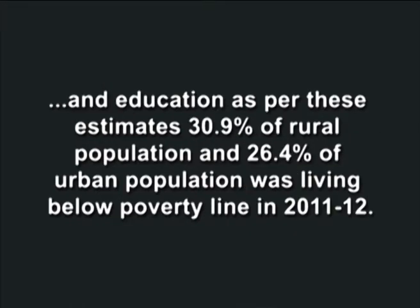As per these estimates, 30.9 percent of rural population and 26.4 percent of urban population was living below the poverty line in 2011-12. The all-India ratio was 29.5 percent. In rural India, 260.5 million individuals were below poverty, and in urban India, 102.5 million people were under the poverty line. Totally, 363 million people were living below the poverty line in 2011-12. The committee also noted that there was a substantial drop in the poverty ratio from 2009 levels.